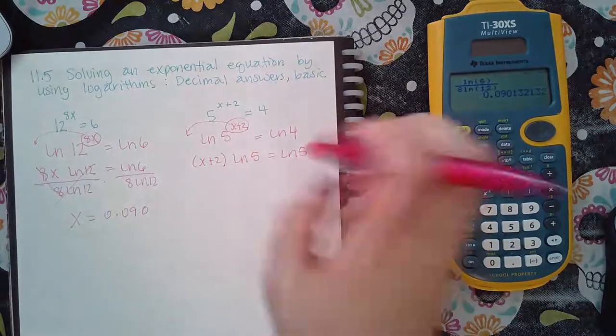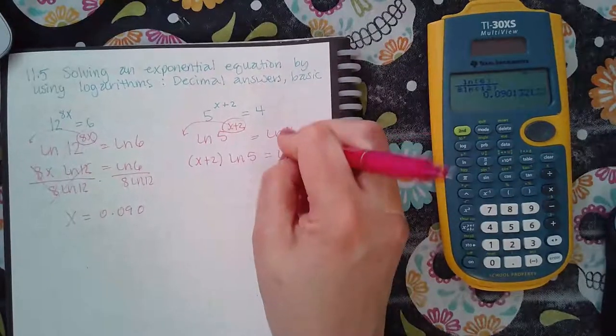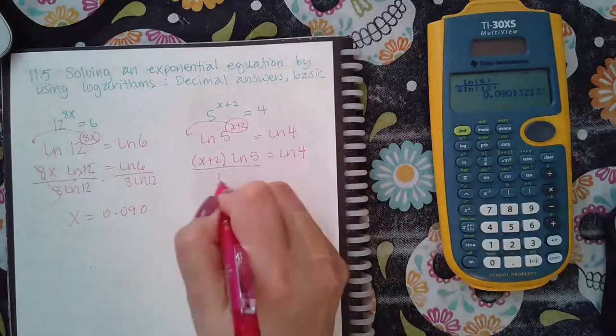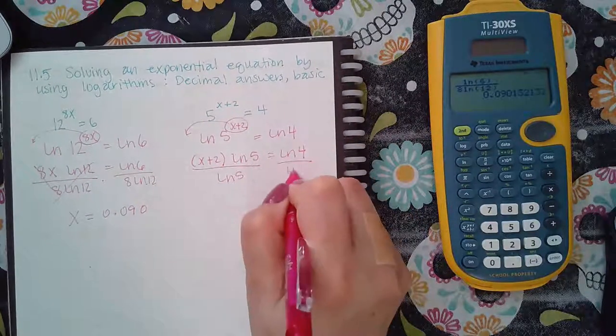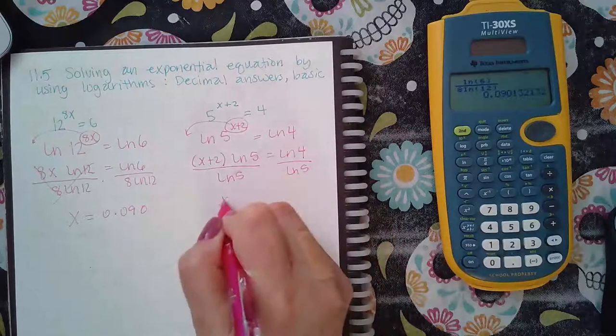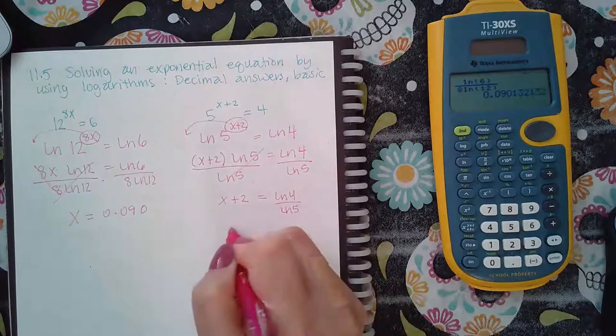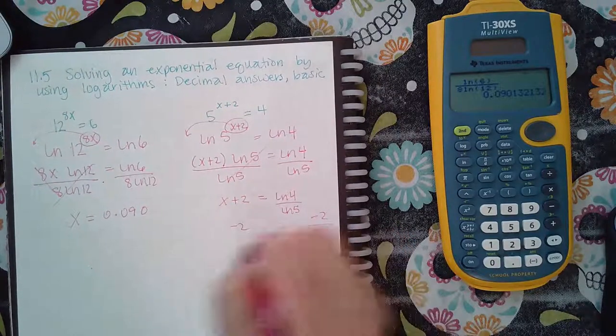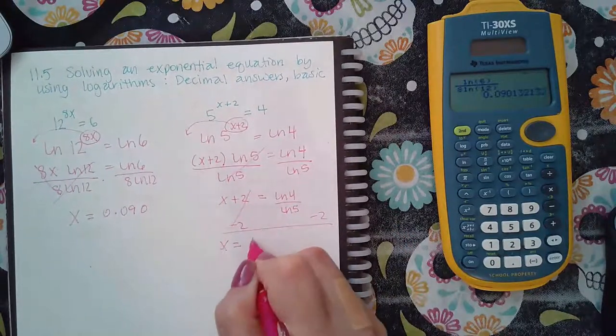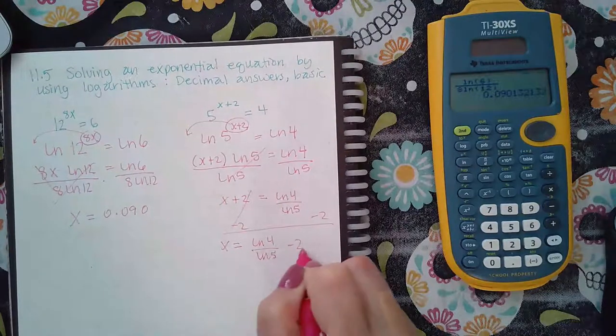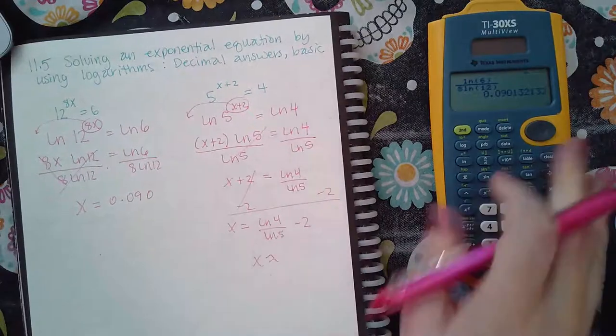And then in order for me to solve for the x, I do need to divide by this ln of 5. So that I get just the x plus 2 equal to ln of 4 over ln of 5. And then I can minus 2 on both sides. So I get x equals ln of 4 over ln of 5 minus 2. And I can type that in my calculator.